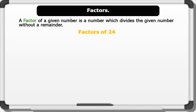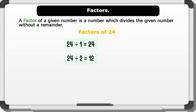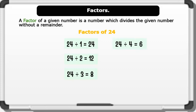Let's see the factors of 24. 24 divided by 1 equals 24 without remainder. 24 divided by 2 equals 12 without remainder. 24 divided by 3 equals 8 without remainder. 24 divided by 4 equals 6 without remainder.